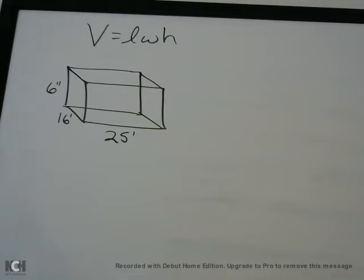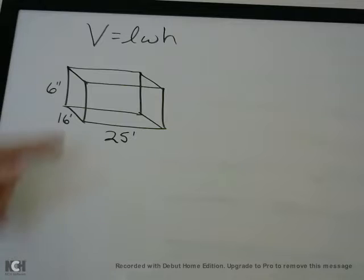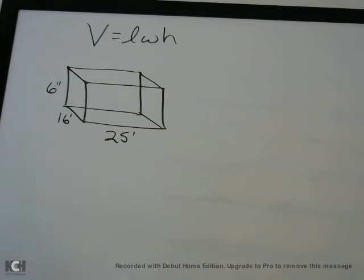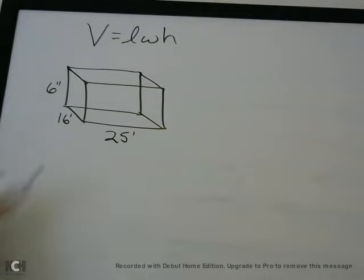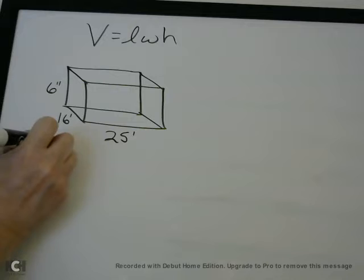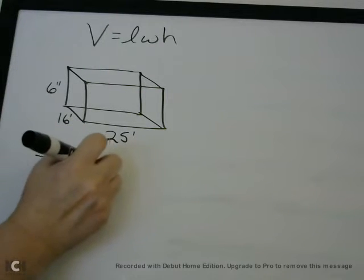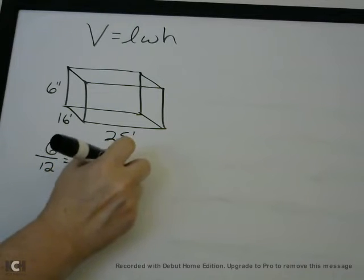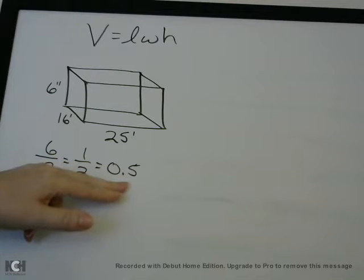Be careful when you're doing these problems — area, perimeter, or volume. Here you have feet, but here you have inches. You can't multiply feet and inches together; they all have to be the same units. So you can either change everything to inches or change everything to feet. Since we have two numbers in feet, we're going to change everything to feet. We know there are 12 inches in a foot, so 6 inches divided by 12 gives you one half, which as a decimal is 0.5. So 6 inches is 0.5 feet, or half a foot.